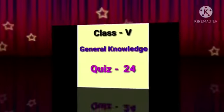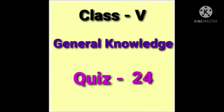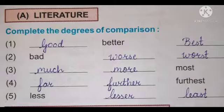Class 5 General Knowledge Quiz No. 24. A. Literature: Complete the degree of comparisons. Students, the following degrees of comparison we have seen in English grammar. We will just go through them.